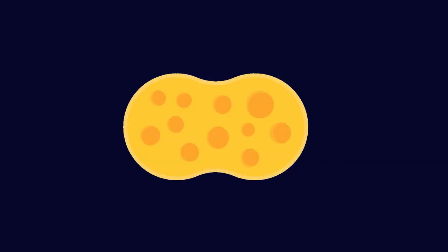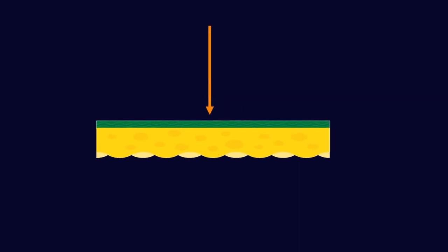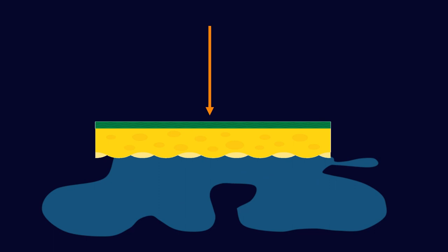The analogy we always give is it's like a sponge, where the thickener is the sponge and the base oil is the water. When you put stress on it, it releases the base oil into the application. The oil does the lubricating of the bearing, and when we release that stress the oil goes back into the sponge. That's why it doesn't leak anywhere or escape from the bearing. A really important concept to understand.